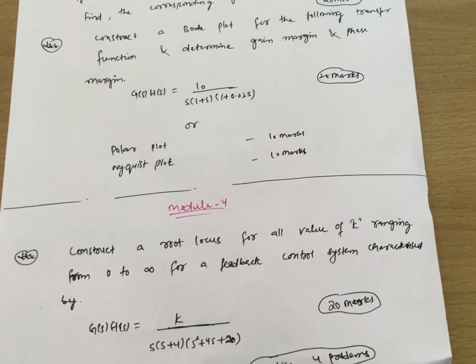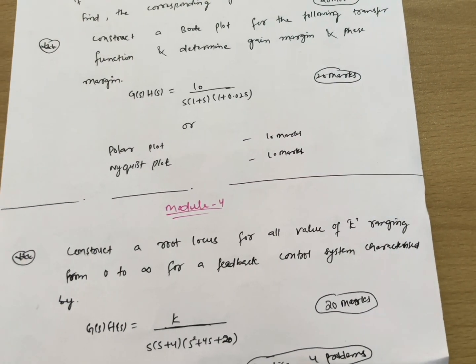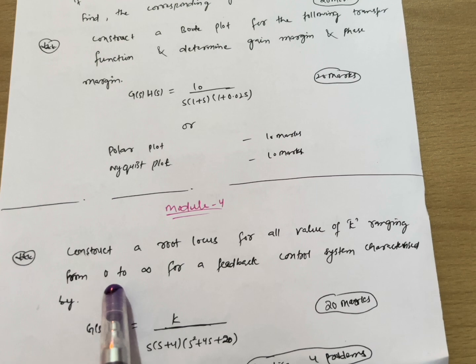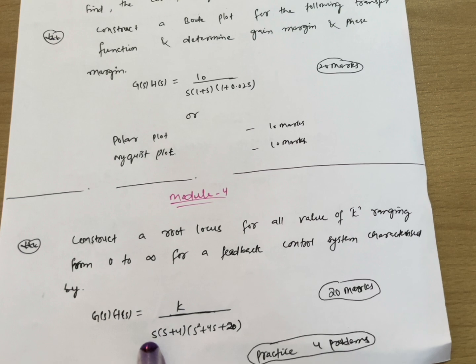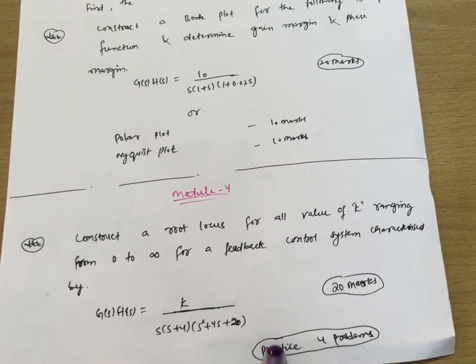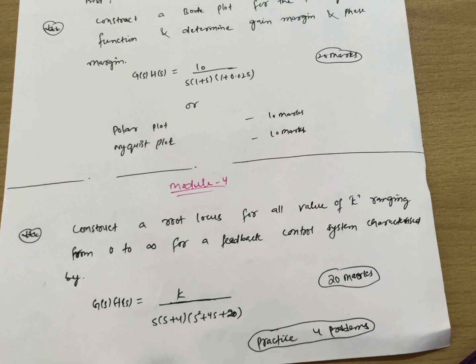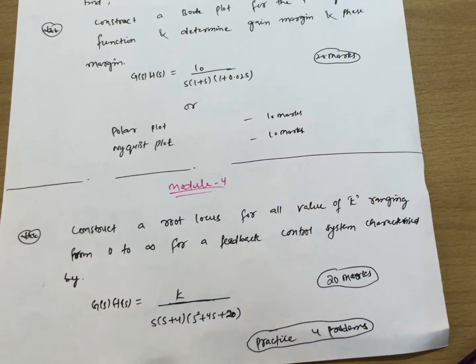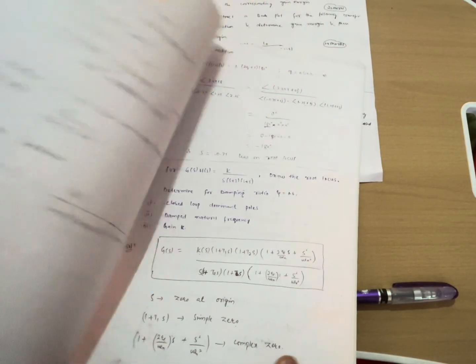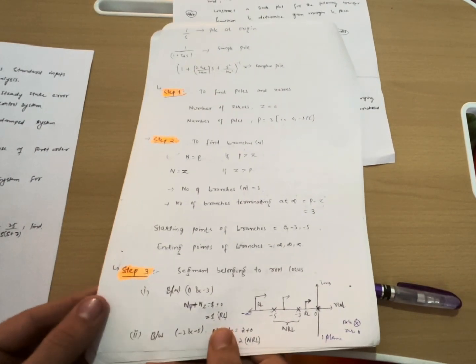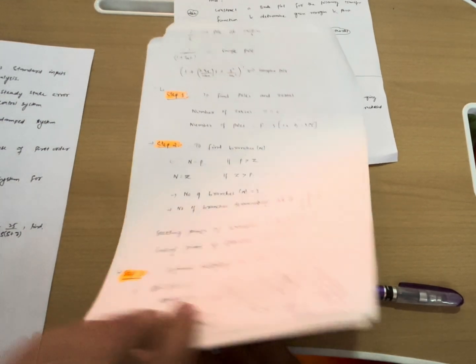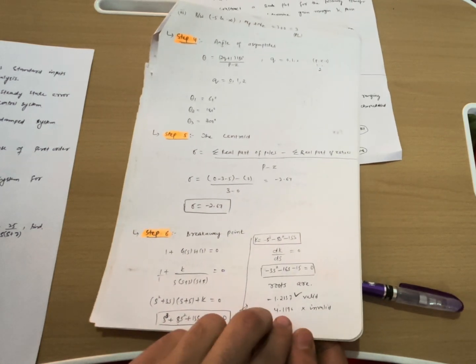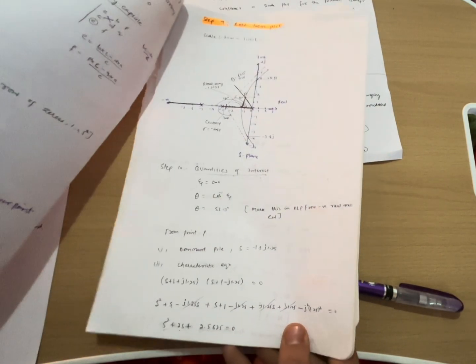Next, Module 4 is again a 20-marks root locus problem. For example: 'Construct a root locus for all values of K ranging from zero to infinity for a feedback control system with G(s)H(s) = K / [s(s+4)(s²+4s+20)].' You should practice four problems from root locus. There are some steps to follow — see here. If you understand the concept, I am confident you will easily grab 20 marks from root locus. These are simpler problems, no rocket science at all.